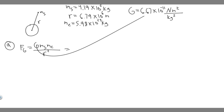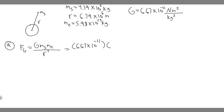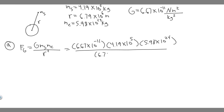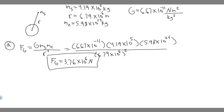We have all the numbers. G is 6.67 times 10 to the minus 11 — the gravitational constant you need to memorize. Plugging in: 6.67 times 10 to the minus 11, times 4.19 times 10 to the 5 (mass of space station), times 5.98 times 10 to the 24 (mass of Earth), divided by 6.79 times 10 to the 6 squared. When you plug this into your calculator, F sub G equals approximately 3.76 times 10 to the 6 newtons. That's your answer to A.